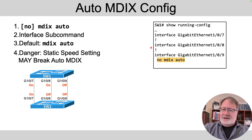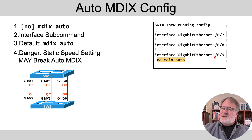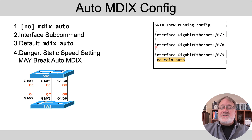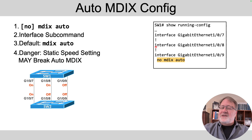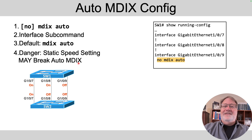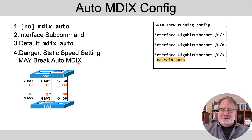The command to enable AutoMDIX is 'mdix auto' — that's the default. To disable it, use 'no mdix auto'. In my examples, 'no mdix auto' is a subcommand under gig 1/0/9 to disable the feature. The first two interfaces have it enabled but the command doesn't appear in show running-config output, because default config settings typically don't appear. One last caveat: IOS documentation mentions that statically setting the speed on an interface may break AutoMDIX, though in practice that may be a historical reference not yet removed. If you see a speed command, be aware it might affect AutoMDIX behavior.